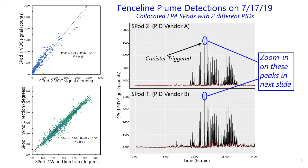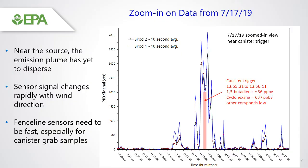In this zoomed-in version of the previous graph, you can see the close agreement of the two co-located sensors — one in blue and one in black. This slide also shows how the canister system works in fenceline-style sensors. The red box shows the time where a canister was triggered for under one minute. This sustained emission event was only present for about three minutes while wind conditions aligned with the sensor. This is why fenceline sensors must be fast to catch these fast-moving sharp signal events where the plume hasn't begun to disperse yet. This canister grab sample was able to collect elevated levels of 1,3-butadiene and cyclohexane at this site.